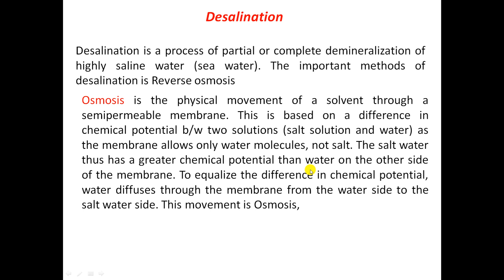Before going to discuss about reverse osmosis, we have to first discuss about the osmosis process. Osmosis process means when two solutions of different concentrations are separated by a semipermeable membrane, the solvent will move from the lower concentration to higher concentration, and solute will move from the higher concentration to lower concentration. The movement of solvent through a semipermeable membrane is used to balance the chemical potential. This is based on a difference in the chemical potential between two solutions — that is salt solution and water. As the membrane allows only water molecules, not salt,